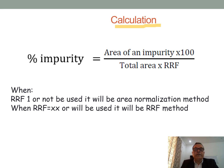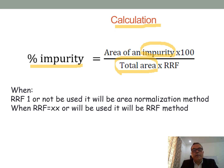Once RRF is available, the following formula is used to calculate the percentage of an impurity: area of the impurity multiplied by 100, divided by total area multiplied by RRF. To calculate impurity I, the area of impurity I is placed in the numerator, the total area of all peaks in the denominator, and 0.514 is used as the RRF.